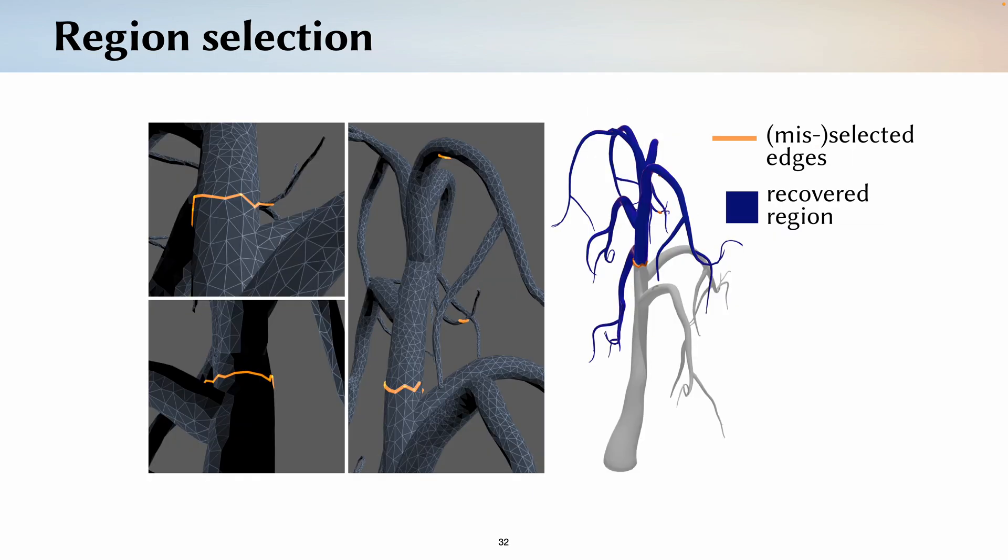If you've ever had the frustration of trying to select edges on a 3D mesh and 2D screen space, our method now allows robust region selection. Here we've selected only a sparse set of edges and even misselected a few edges. But our method can still return a good segmentation of our 3D model.